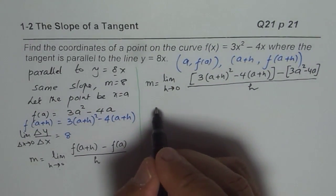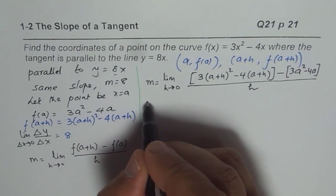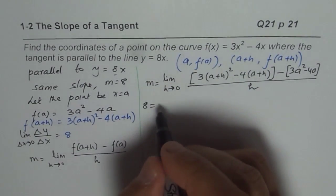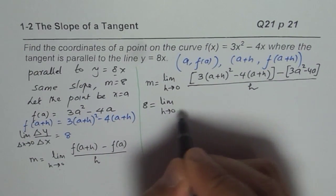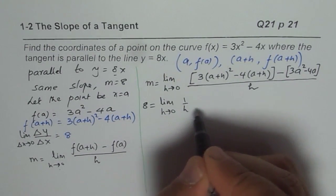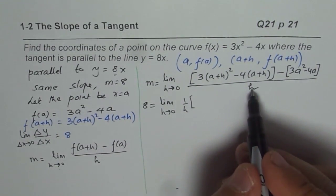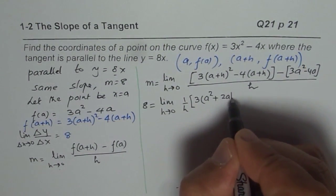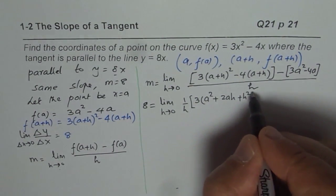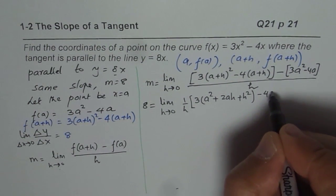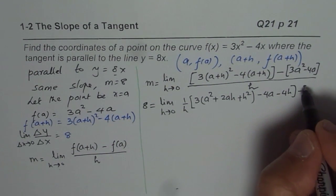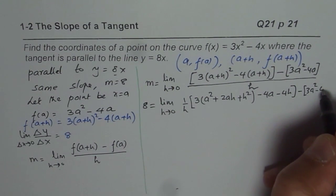That is the formula for us, and we know that the slope is 8. So, we will write 8 equals to all this. Let me now expand these things. I will write 1/h here. That is the quotient. Expand this: we have 3(a² + 2ah + h²). Here we have -4a - 4h. And then, from this, we have to take away 3a² - 4a.